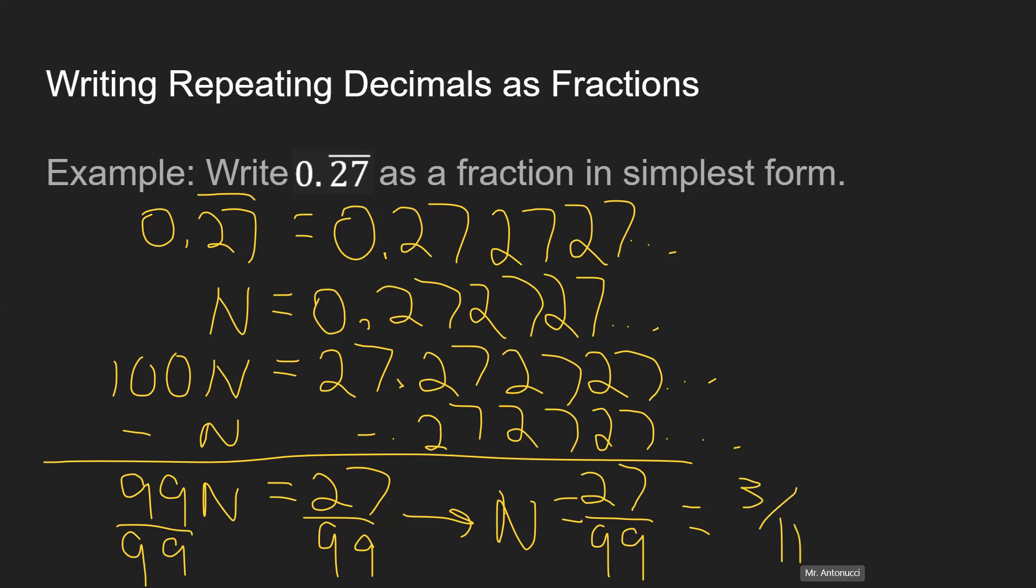And again, you could check, type 3/11 into your calculator, and you get 0.27272727 and so forth. All right guys, that's how to write repeating decimals as fractions. Hope that's helpful to you. Take care.